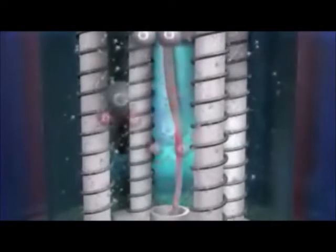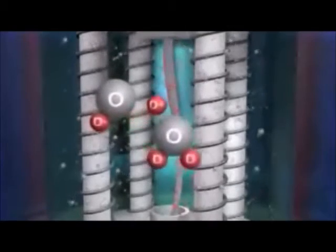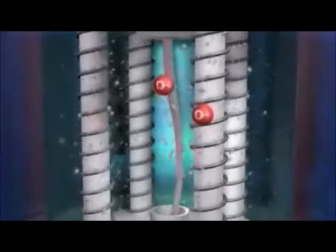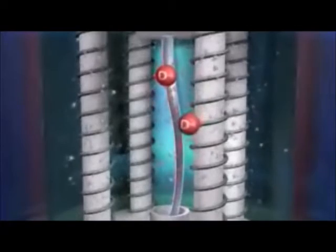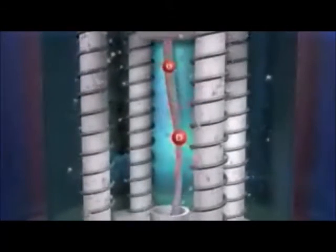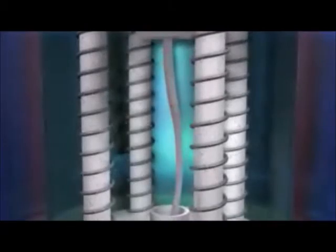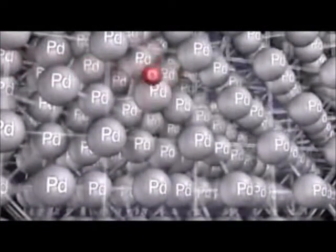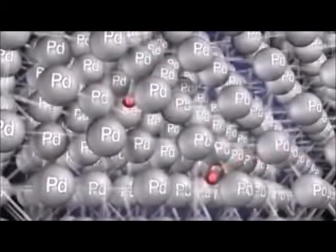Meanwhile, the D+ ions are attracted to the negatively charged palladium cathode. While they quickly find an electron at the surface of the cathode to neutralize the charge. This cathode is made of palladium atoms arranged in face-centered cubic lattice. Deuterium atoms find their way into the lattice by popping through the inter-atomic sites within the lattice.